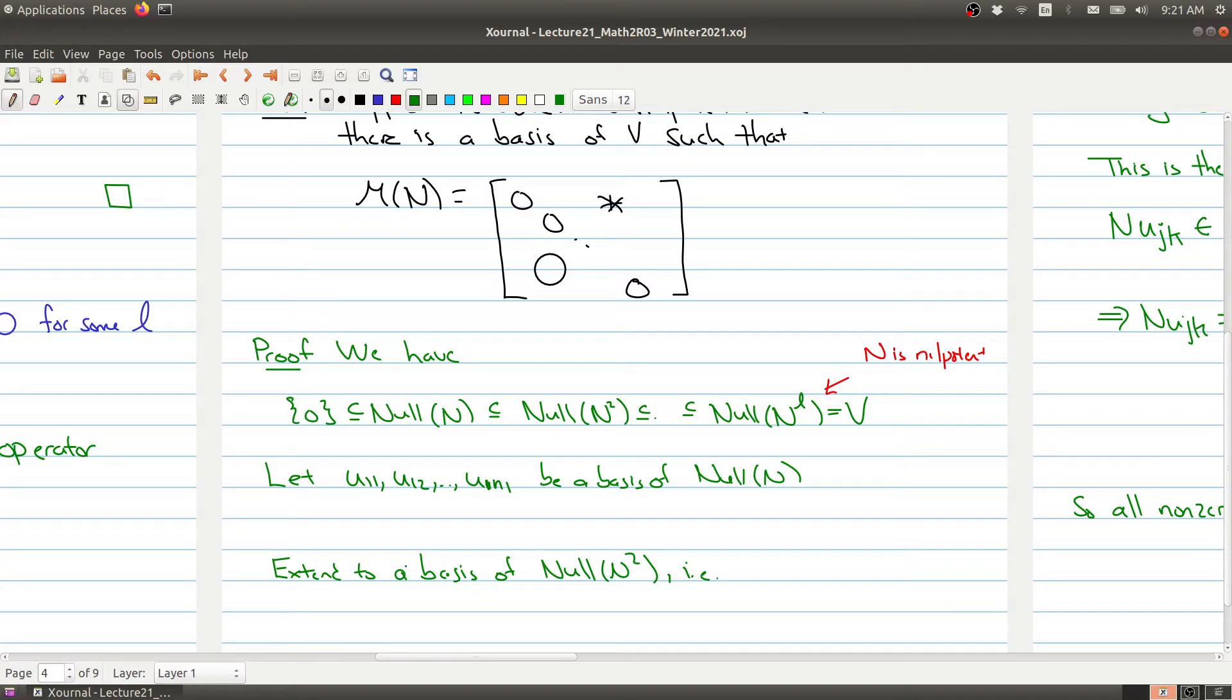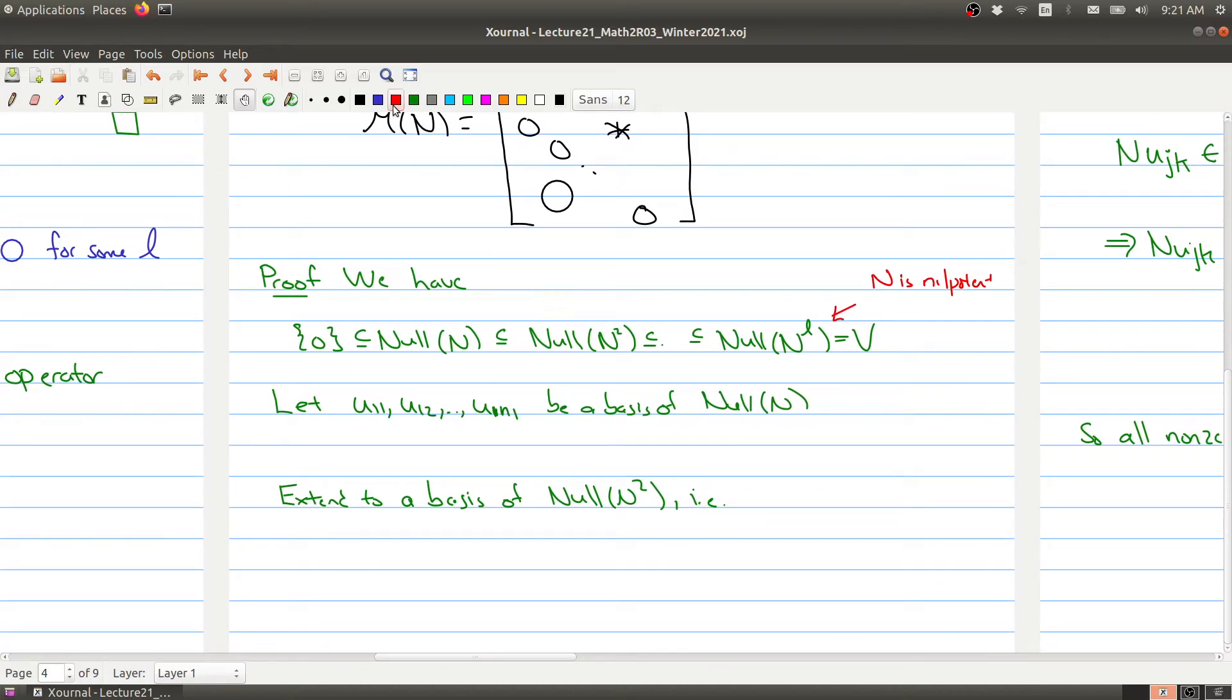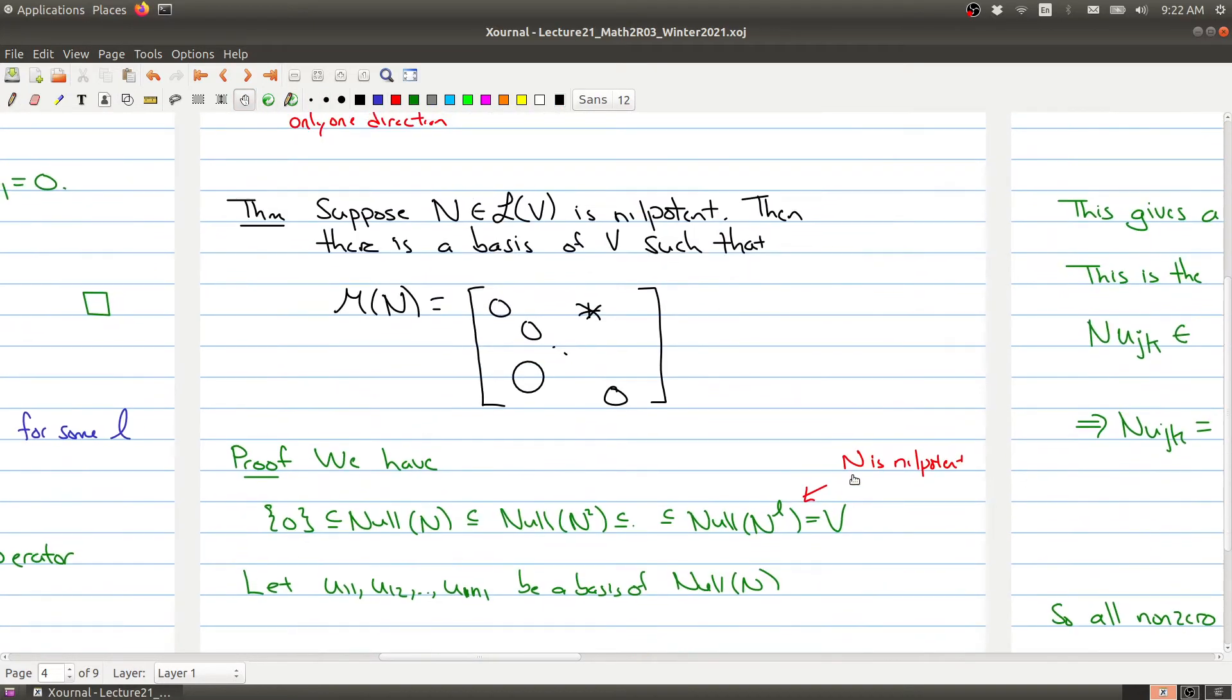But now these vectors, because they're in here and this is inside of here, we can now extend this collection to a basis for the next subspace. So you take u11 up to u1n1 and now you can add some new vectors, u21 up to u2n2, which are going to be the basis for N squared. So we have the basis for null N, and then this is the basis of the null space of N squared. And what we want to do now is keep doing this. We're going to keep extending this piece by piece so that we get a basis for all of our vector space.